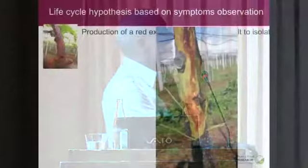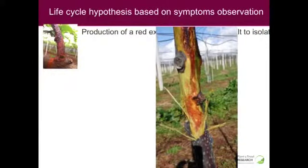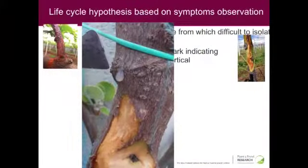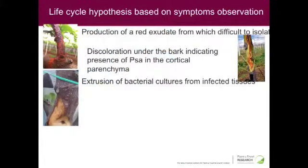The next symptom we had was the discoloration of the tissue underneath the bark, and we saw some of that yesterday. That indicates that the cortical parenchyma tissues have been colonized and affected by PSA. We can also have drops of exudate — a white exudate, very different from the red exudate. That white exudate is full of bacteria — it's almost a pure culture of PSA. That tells us the tissue underneath the bark can contain so much pathogen that it is being extruded out of the tissue.